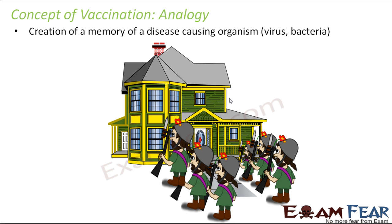When the same virus attacks again — the real virus or bacteria capable of causing disease — your immune system already has the memory of that particular virus or bacteria. So the body will fight back against that microbe with greater strength and send it away. The microbe will not be able to cause the disease. This is how the concept of vaccination works, and microorganisms play their role in preparing the vaccine using weak or dead microbes.